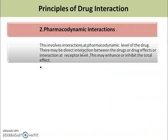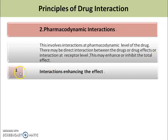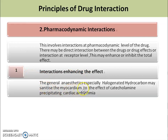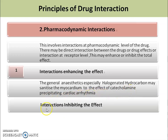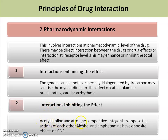The second type of interaction is pharmacodynamic interaction. This involves interaction at the pharmacodynamic level — there may be direct interaction between drugs or at the receptor level, which may enhance or inhibit the total effect. First, interaction enhancing the effect: general anesthetics, especially halogenated hydrocarbons, may sensitize the myocardium to catecholamine, precipitating cardiac arrhythmia. Second, interaction inhibiting the effect: acetylcholine and atropine are competitive antagonists opposing the action of each other. Alcohol and amphetamine have opposite effects on the central nervous system.